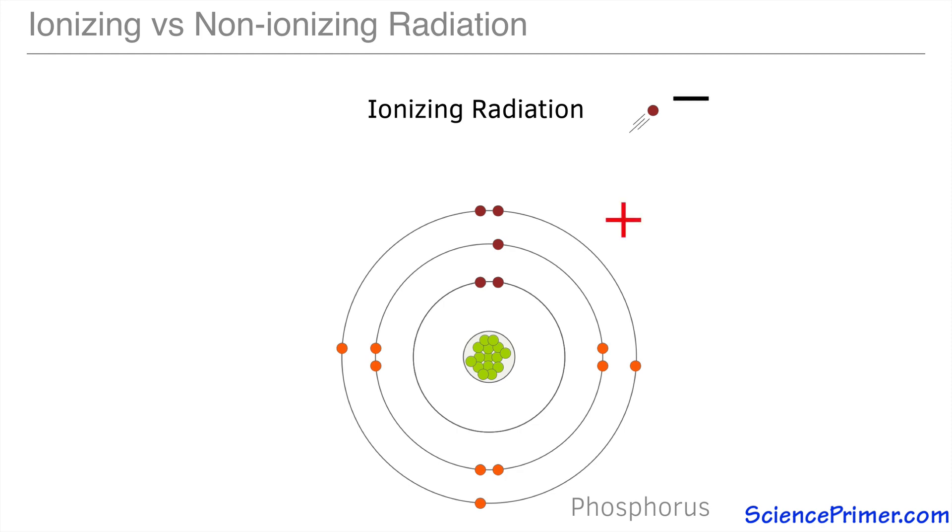Both the positively charged atom and the highly energetic negatively charged electron are very reactive. The ionization of the atom puts both the atom and the electron in such energetically unfavorable states they will tend to interact with surrounding matter, ionizing other atoms, breaking bonds, and transferring energy in unpredictable and destructive ways. This is what makes ionizing radiation so dangerous.